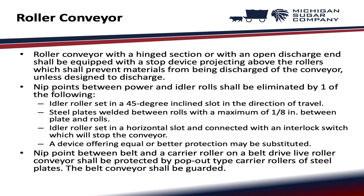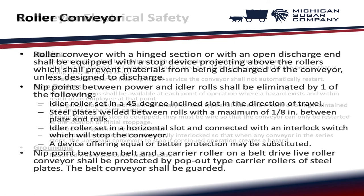A roller conveyor with a hinge section or with an open discharge end shall be equipped with a stop device projecting above the rollers, which shall prevent materials from being discharged off the conveyor unless designed to discharge. Nip points between power and idler rolls shall be eliminated by one of the following: idler rollers set in a 45-degree inclined slot in the direction of travel; steel plates welded between rolls with a maximum of one-eighth inch between plate and rolls; or idler rolls set in a horizontal slot and connected with an interlock switch which will stop the conveyor. A device offering equal or better protection may be substituted. Nip points between belt and carrier roller on a belt drive live roller conveyor shall be protected by pop-out type carrier rollers or steel plates. The belt conveyor shall be guarded.